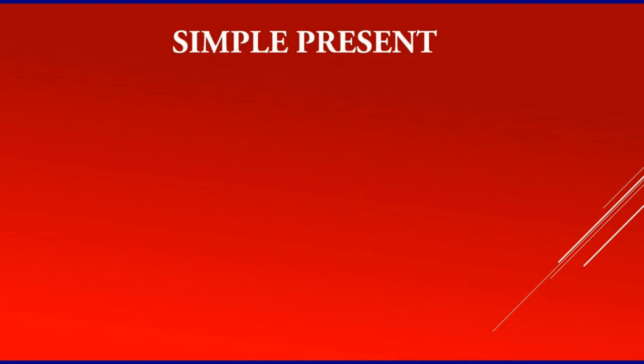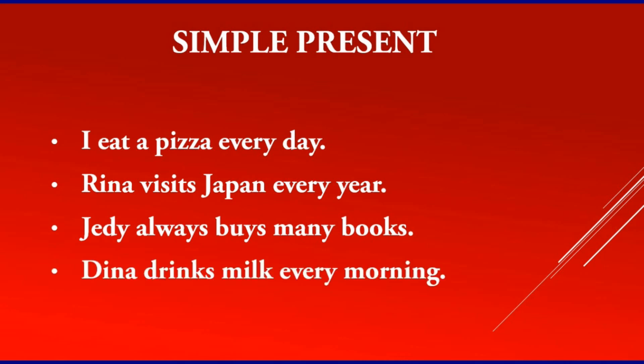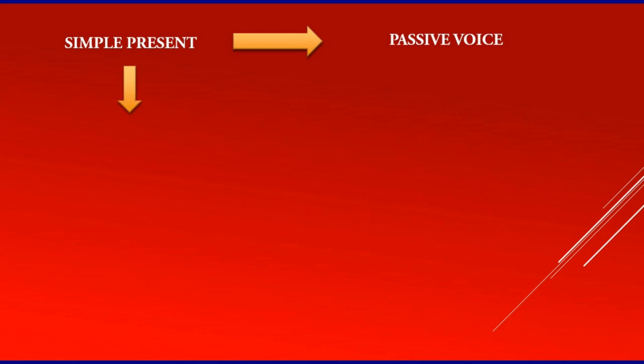Simple present basically means if you want to talk about something that happens daily, as your daily activity or as your habit, usually we use simple present. For example: I eat a pizza every day. Rina visits Japan every year. JD always buys many books. Dina drinks milk every morning. Now, how to change a sentence to passive in simple present?